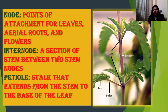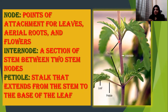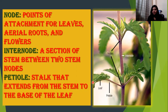Some basic terms associated with stems: a node is the main point on the stem where leaves arise; the distance between any two nodes is called an internode; and the petiole is the stalk that extends from the stem to the base of the leaf. We'll discuss the leaf in detail in part two.